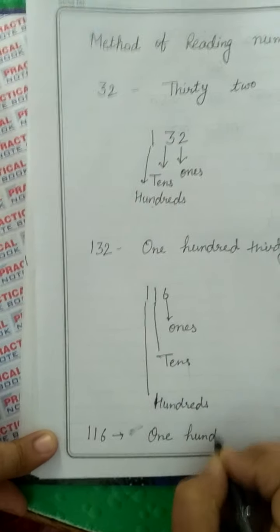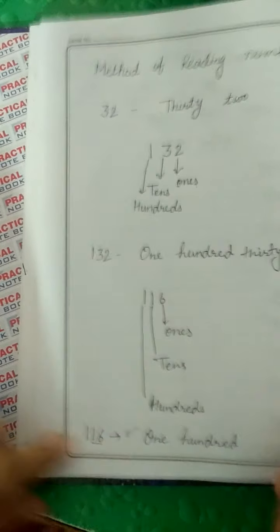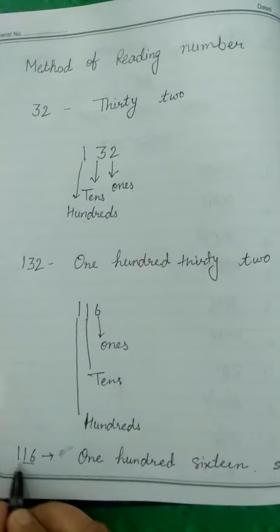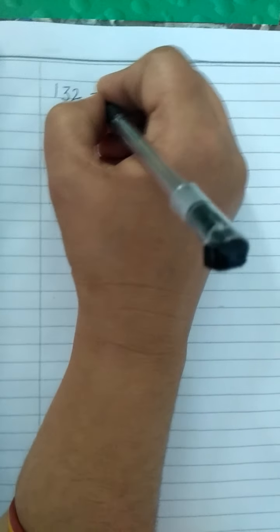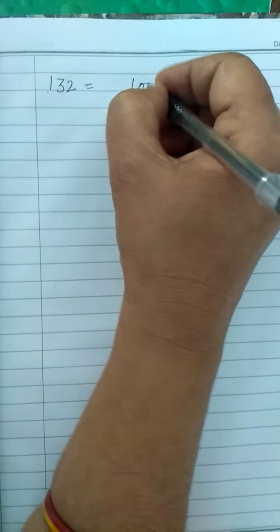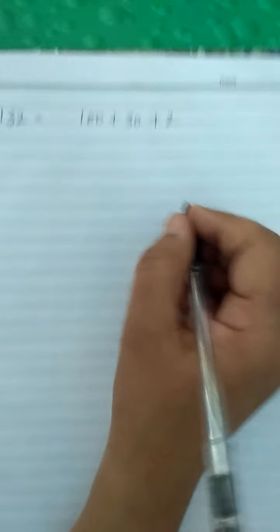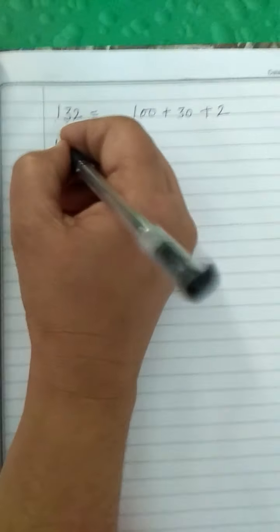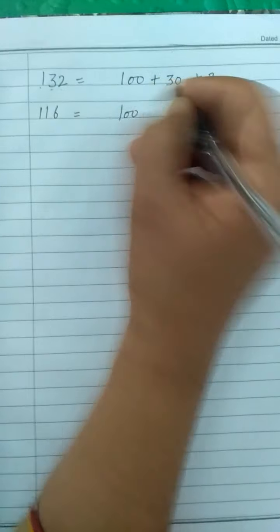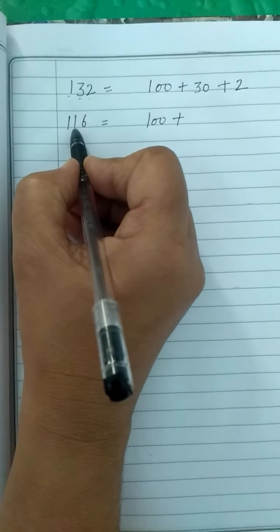What is this number? One hundred sixteen. Now you can write the expanded form of 132: one hundred plus thirty plus two. And for one hundred sixteen, the expanded form is: one hundred, because one is at the hundreds place, plus ten, because one is at the tens place, plus six, which is at the ones place.